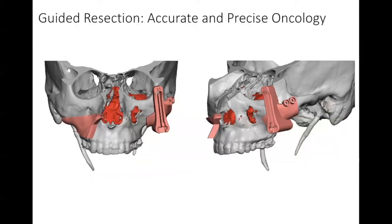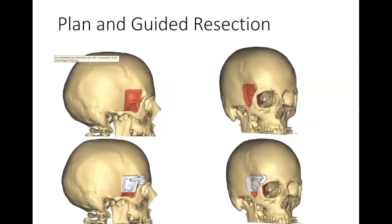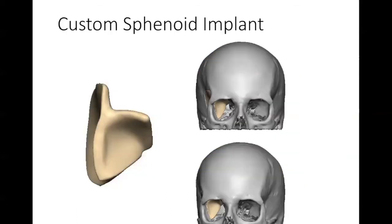Here is another example of a massive tumor involving the midface, where we've designed cutting guides to allow our head and neck colleagues to have safe margins during resection. This is a case done with our neurosurgical colleagues where we designed a cutting guide to remove a sphenoid tumor growing through the temporal bone and into the orbit. We also had a customized implant made that completely filled and replicated the defect in one piece — this technology allows 3D printing of all different types of materials, including PEEK implants.